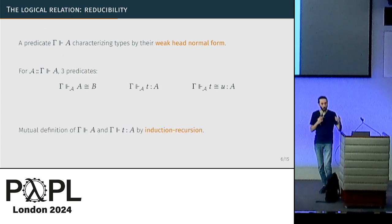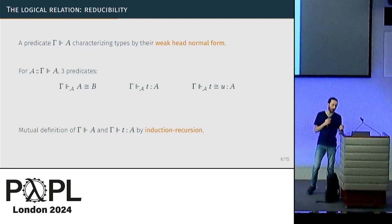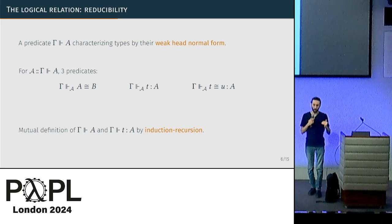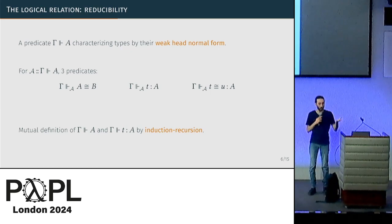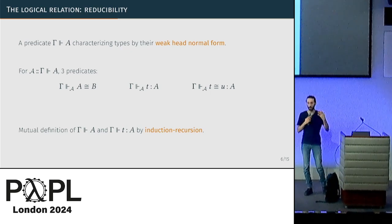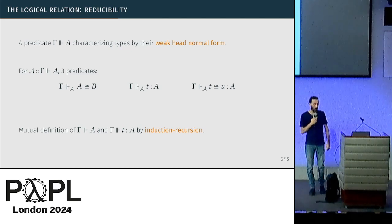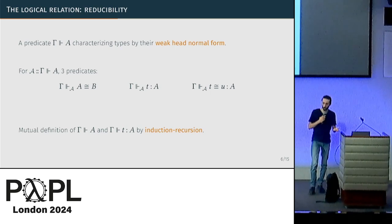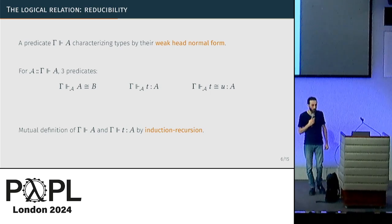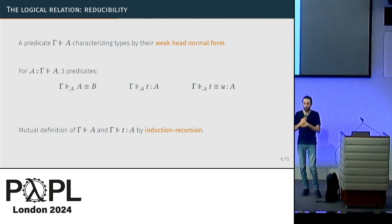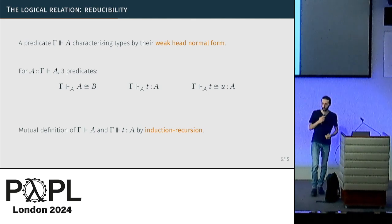As soon as you have types containing binders, you need to define the type and term reducibility predicates mutually, which means relying on an induction-recursion principle — mutually defining an inductive type and a recursively defined function together. This principle is available in Agda but not in Coq, so we had to do something to port the development. From a logical standpoint, this principle is very powerful, creating a big gap between the object theory — vanilla Martin-Löf type theory — and the meta-theory, which now requires inductive-recursive universes.